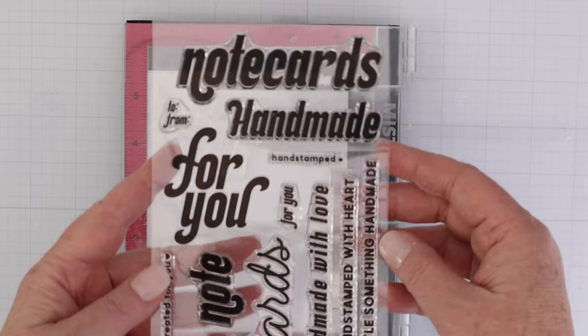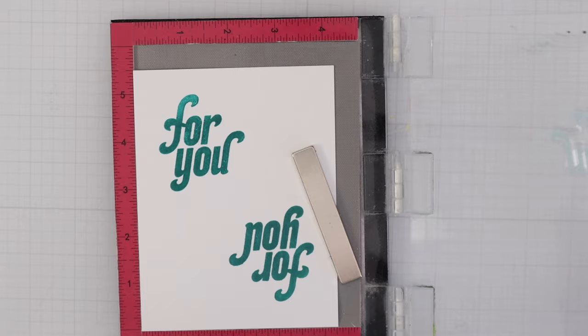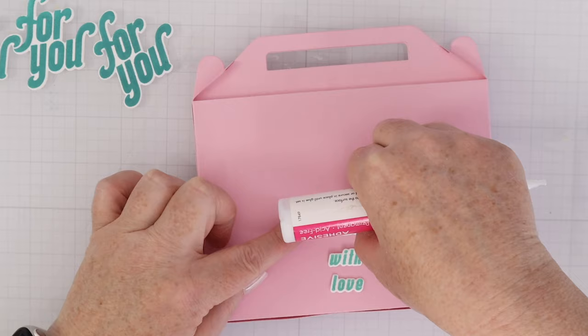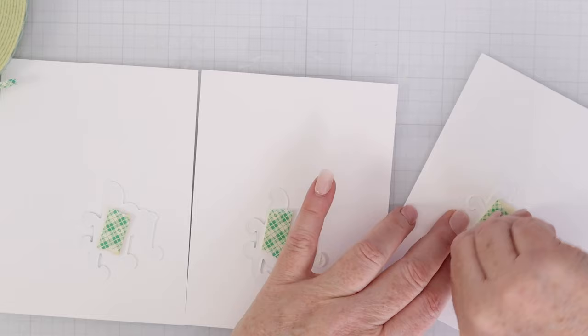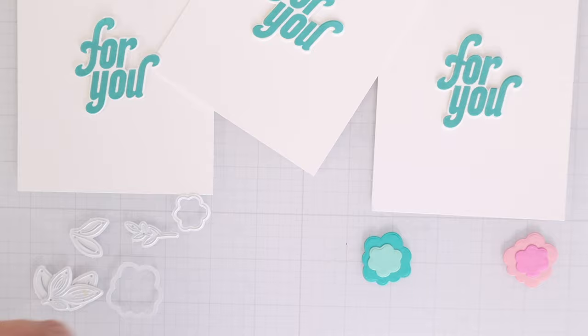This is the handmade note cards, stamps, and dies. So you can use this in a lot of different ways. You can use it to make note cards to put inside to give as a gift. And that's what I'm going to do. So I've stamped handmade with love. That's for the back of the box. And then I stamped for you three times. I'm going to glue the handmade with love on the back of the box. And then I'm going to pop up the for yous on three A2 cards.